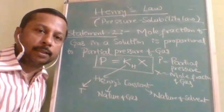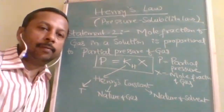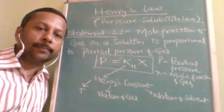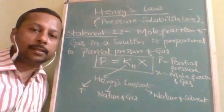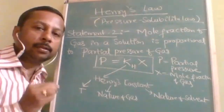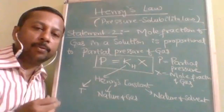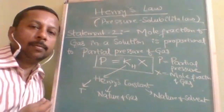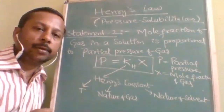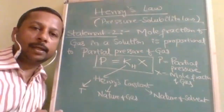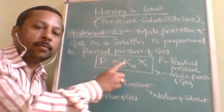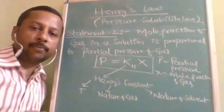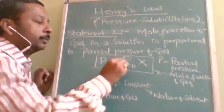Statement two is much more important and useful in numericals and graph-based questions. It states that the mole fraction of a gas in a solution is directly proportional to the partial pressure of the gas. More gas dissolved means higher mole fraction and higher partial pressure. Mathematically: P = kH × x, where x is the mole fraction of the gas in solution and P is the partial pressure of the gas.